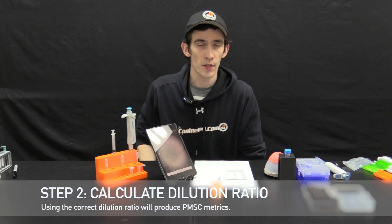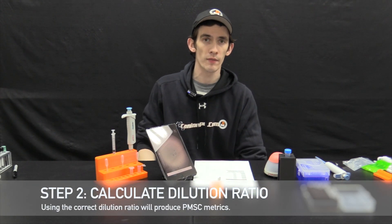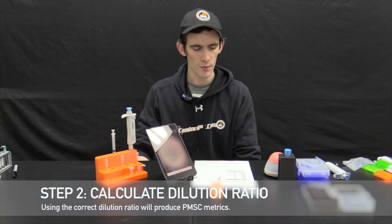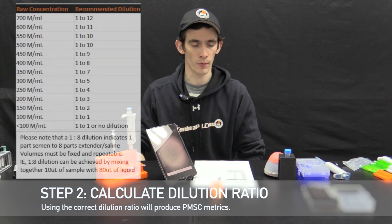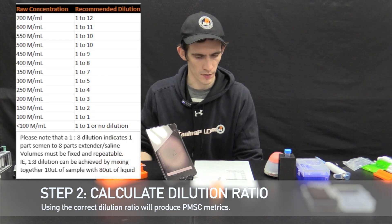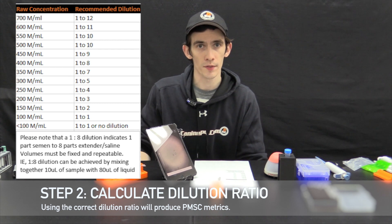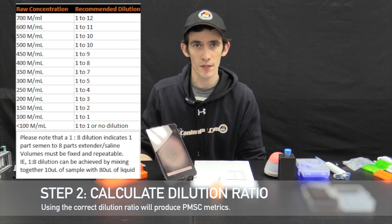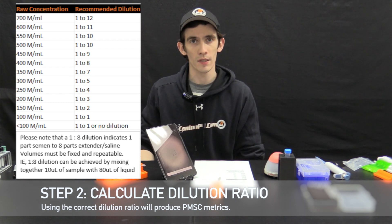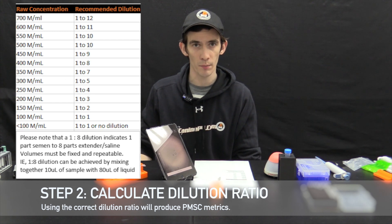So now that we have the raw concentration count of approximately 470 million per milliliter, use the provided chart from K9P4 to calculate your dilution ratio. Now for this dilution ratio the values should be close to exact. So we certainly recommend using a mechanical pipetter.